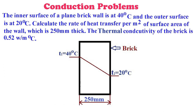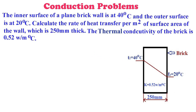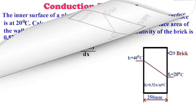The inner temperature is 40 degrees centigrade and outer temperature is 20 degrees centigrade, and 250 mm is the thickness of this brick. The thermal conductivity of brick is 0.52 watt per meter degree centigrade, and we find out the rate of heat transfer, that is watts per meter per unit area. Now the formula for rate of heat transfer: small q is equal to capital Q by A.